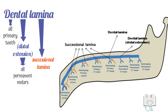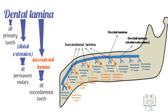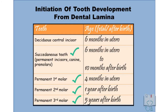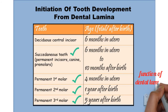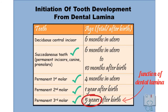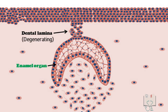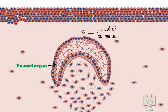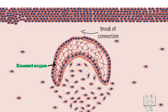From the dental lamina, in areas of deciduous teeth development, a lingual extension develops called the successional lamina. This successional lamina gives rise to the succedaneous teeth, that is permanent incisors, permanent canines, and permanent premolars. Their development begins between the fifth month of fetal age to the tenth month after birth. The function of dental lamina can thus be seen till the age of five years, as the last tooth to start development is the third molar. Once its function is over, the dental lamina starts undergoing degeneration, with epithelial cells replaced by connective tissue, breaking the connection between the developing tooth and the oral ectoderm.